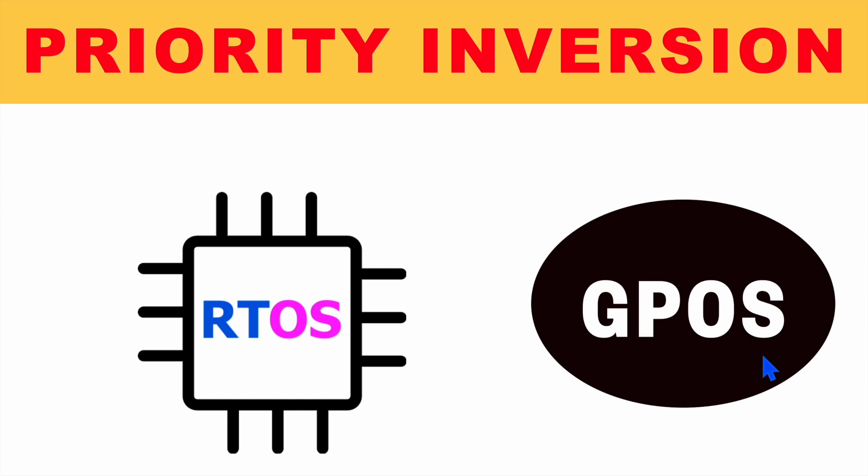What is priority inversion and how is this problem solved in real-time operating systems? Let's understand this with an example.